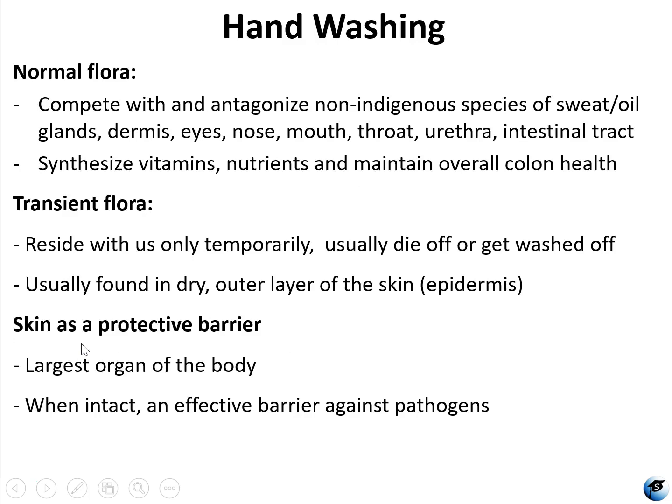To begin, it is important to understand the difference between normal flora and transient flora. Normal flora are microorganisms that normally live with you. Humans have, by some estimates, 10 times more bacterial cells than human cells in their body. Humans cannot survive without their normal flora, which are permanent residents of the body. They're usually not pathogenic, meaning they do not normally cause disease.